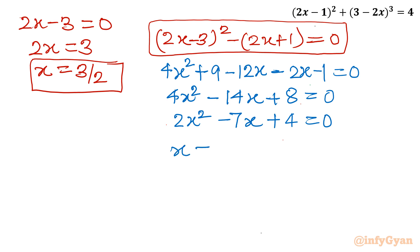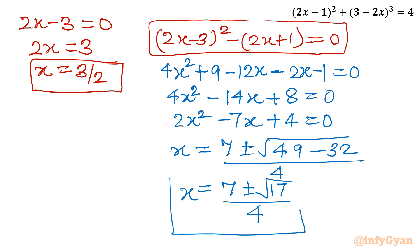Let us use Sridharacharya formula. Minus b so 7 plus minus square root b² 49 minus 4ac 32 divided by 2a. a is 2 so 4. So 7 ± √17 over 4. Here we are having the remaining two solutions. 7 ± √17 over 4. And this is our first solution, x = 3/2. Method 1 is over.